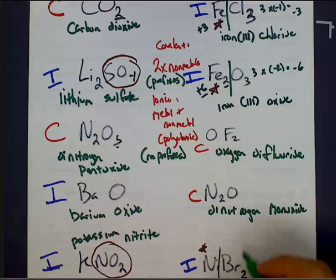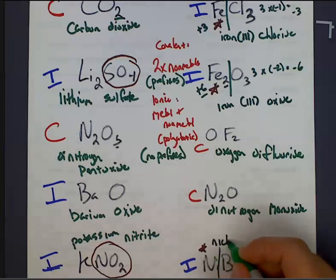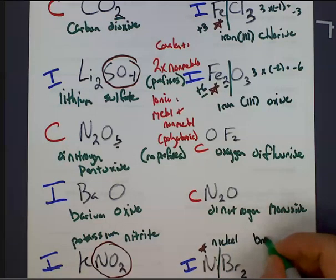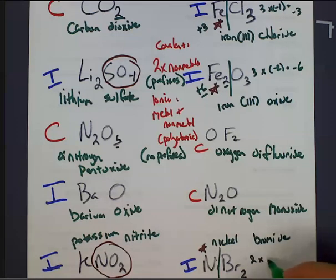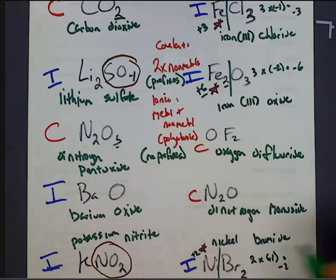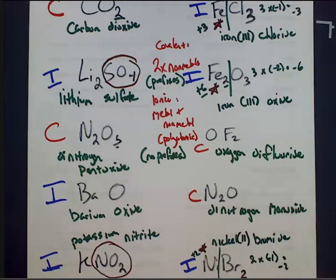Same deal. We have three, but in this time, oxygen wants to be a negative two. So, we've got a total of minus six balanced by a plus six. We take that six and split it two ways. We end up with iron three oxide. We're going to come down here. Starts off like a regular one. Nickel bromide. We have two charges of negative one. So, a total of minus two balanced out by plus two. This would be nickel two bromide.